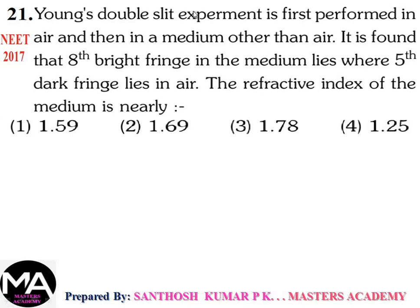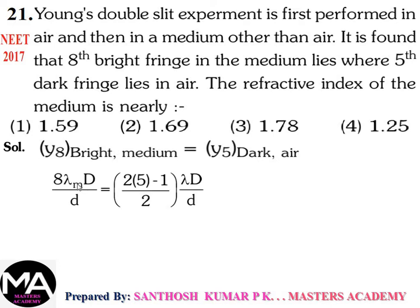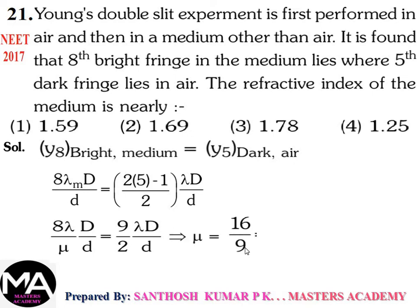Question 21: In Young's double slit experiment, first in air then in a medium. The 8th bright fringe in the medium lies where the 5th dark fringe lies in air. Find the refractive index of the medium. The 5th dark fringe position in air = (2×5 − 1)/2 × λD/d = 9λD/2d. The 8th bright fringe in medium = 8λD/(μd). Setting equal: 8/μ = 9/2, so μ = 16/9 = 1.78. Option 3.